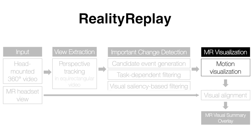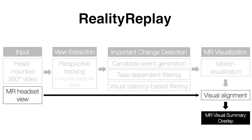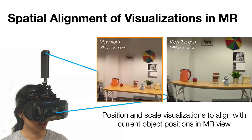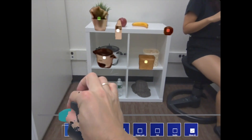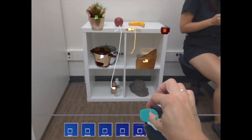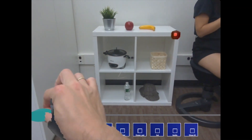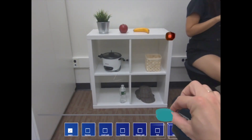After tracking important changes, the system generates in-situ overlay visualizations to effectively summarize these changes. Reality Replay then performs spatial alignment of the visualization to the mixed reality headset view. This step is necessary due to the angle difference between the 360-degree camera and the head-worn display in the current prototype. Reality Replay positions and scales the generated in-situ visualizations so that they align with the current object positions in the mixed reality view. This is the final output of Reality Replay as seen through the mixed reality headset, filtering important temporal changes in the primary region and enabling interactive navigation. The visualization shows the image of the object and the trajectory of movement with trailing light shadow.